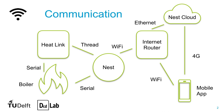On the left, the Nest can directly control the boiler via a serial communication. When this wired connection is not possible, the heat link enables a connection via Thread, a wireless mesh network, to receive the Nest signals and transmit them to the boiler.